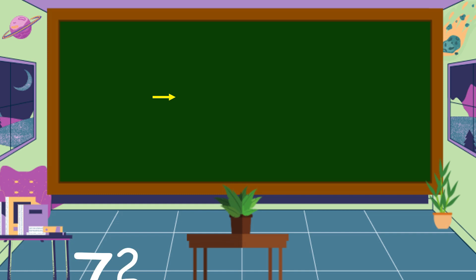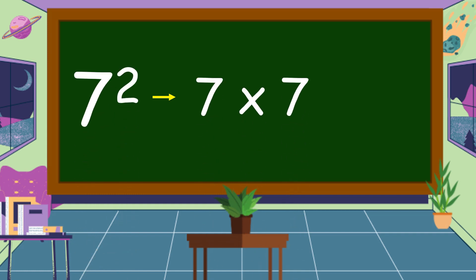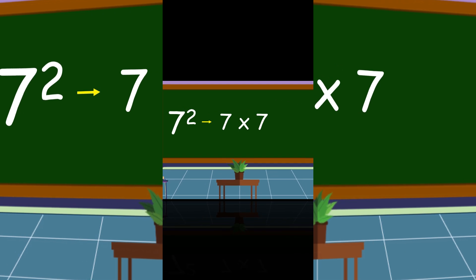Let's describe what we mean by 7 squared. 7 squared is equal to 7 times 7. Since our power is 2, we're going to multiply 7 two times by itself.